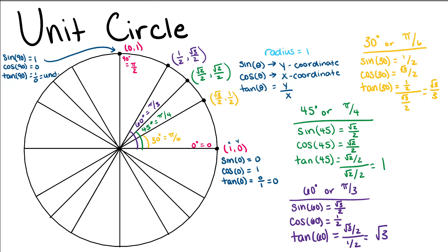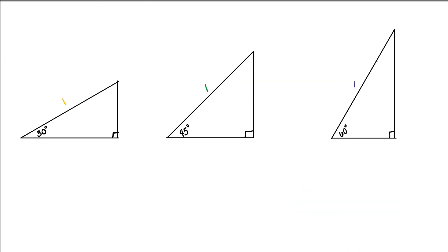If we connect our point to a horizontal line, or just draw a vertical line down from our point, we can see that we can make triangles from these points on the unit circle. Typically when we're working with trigonometric functions, we will use triangles to define different values on our trig functions. For each of these triangles, the radius is 1, because this is on our unit circle. So we have three different shaped triangles just because of the angle measurement at the base of our triangle.